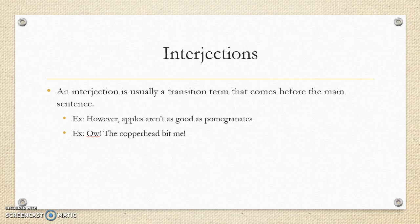An interjection is a transition term that usually comes at the beginning of a sentence — for example, 'however,' or 'ow!' There's a great segment about all of these parts of speech on Schoolhouse Rock, which is available on YouTube. I strongly encourage you to go watch the Schoolhouse Rock episodes on parts of speech because they're fun and help you remember things.